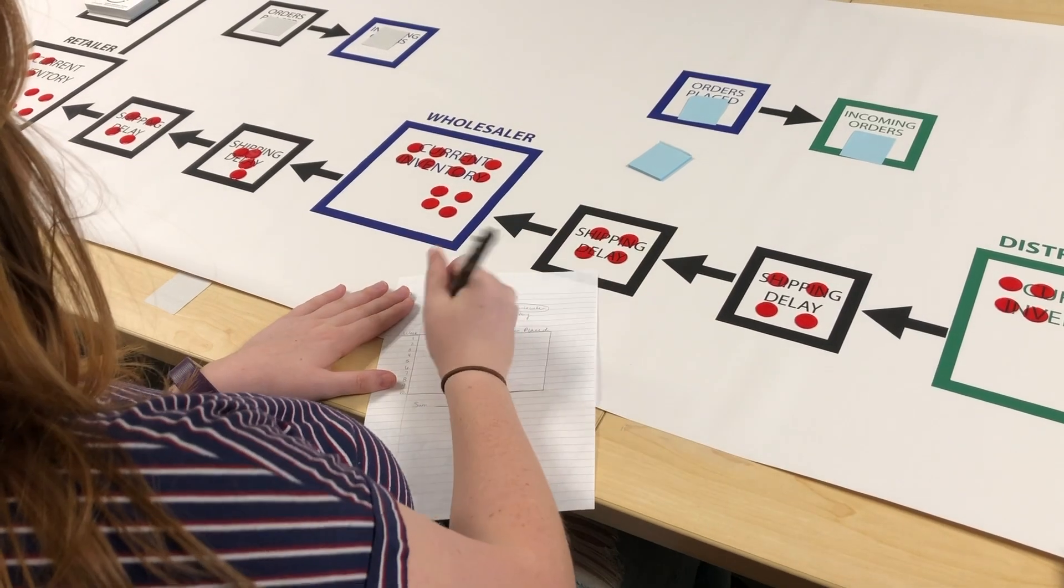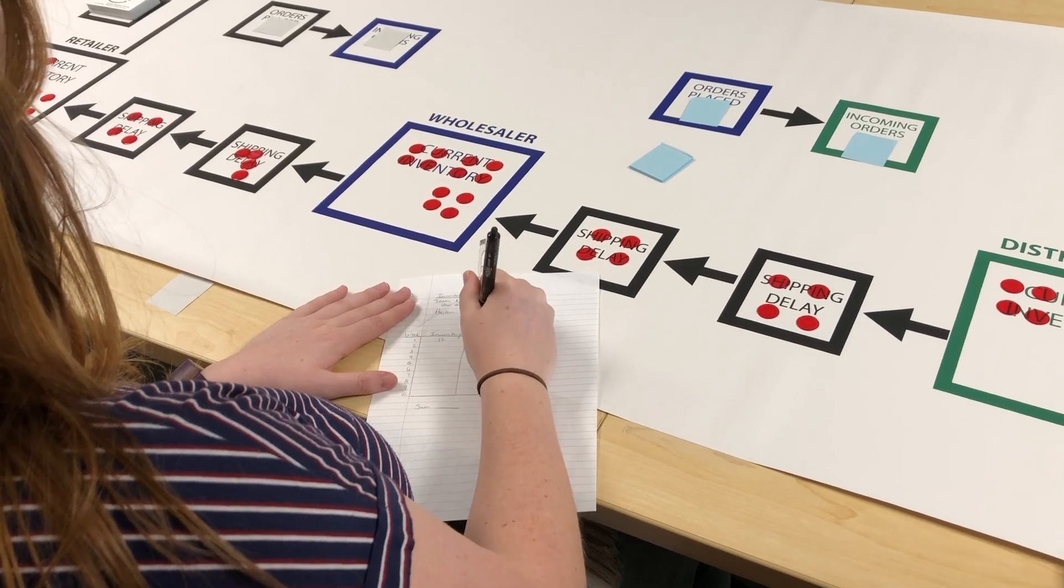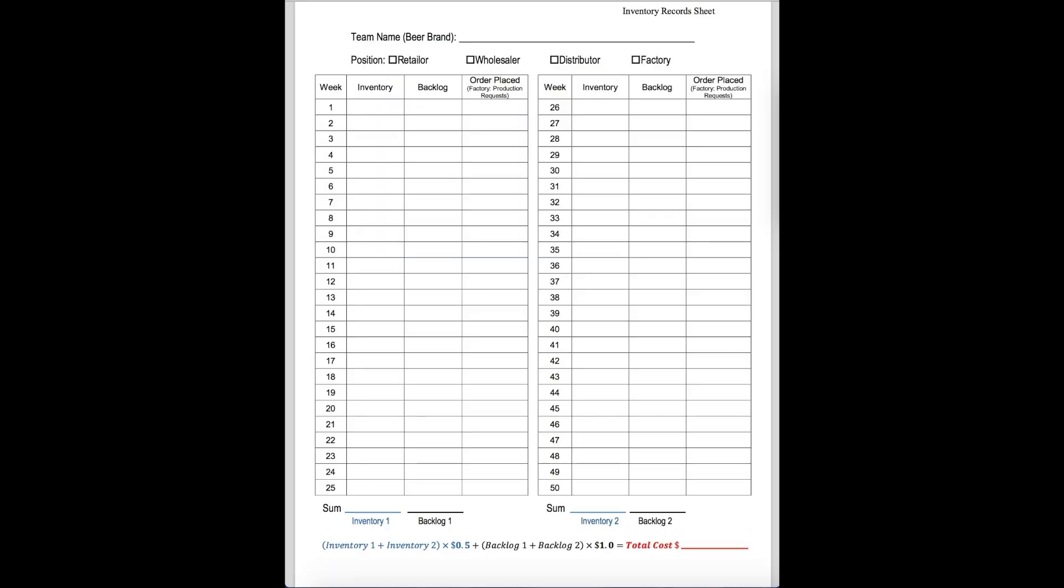The last step is to fill out your form and each position does this the same way. Write down the number of cases you have in your current inventory, any amount of backlog you may have, and the number of cases you requested.